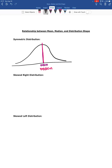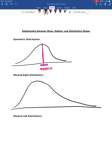A skewed right distribution has most of the data in the histogram on the left, and then a really long tail going off to the right. On a skewed right distribution, the median is still going to fall in the middle — it's not going to be affected by the skew. However, the mean is going to be affected by the skew and will get pulled towards that tail.